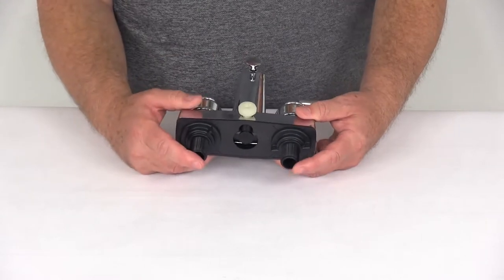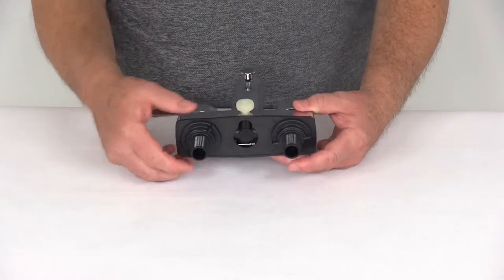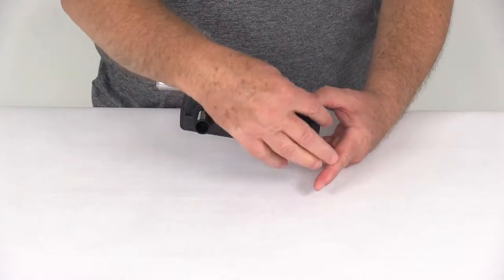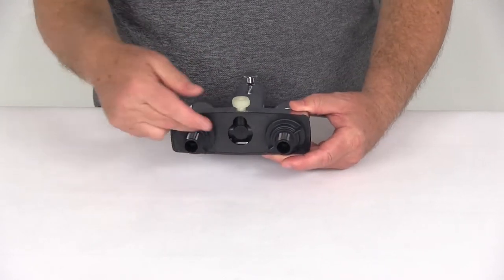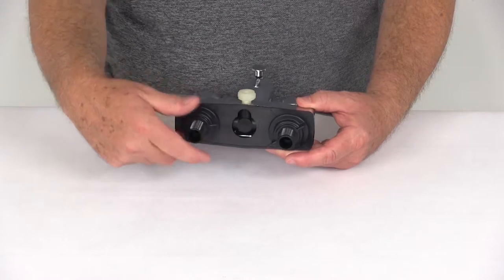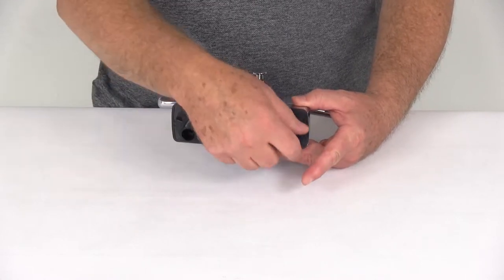You'll drill that in either the tub wall or your shower surround. Then just take off these plastic lock nuts right here that are on the threaded connectors, put this into your wall, and then put your lock nuts right back on and tighten it down to hold it into place.